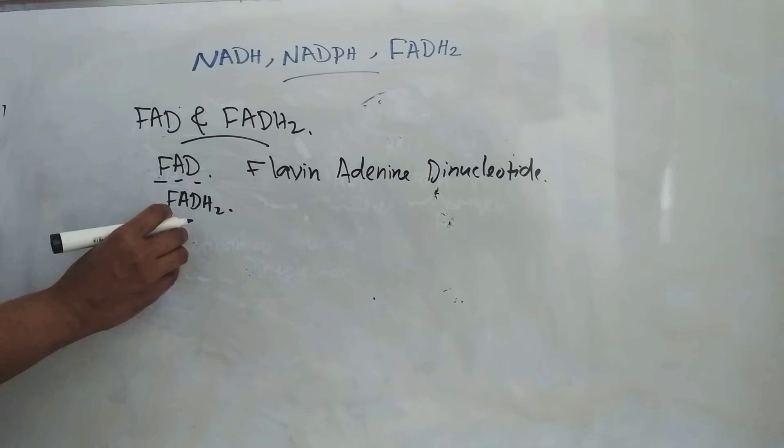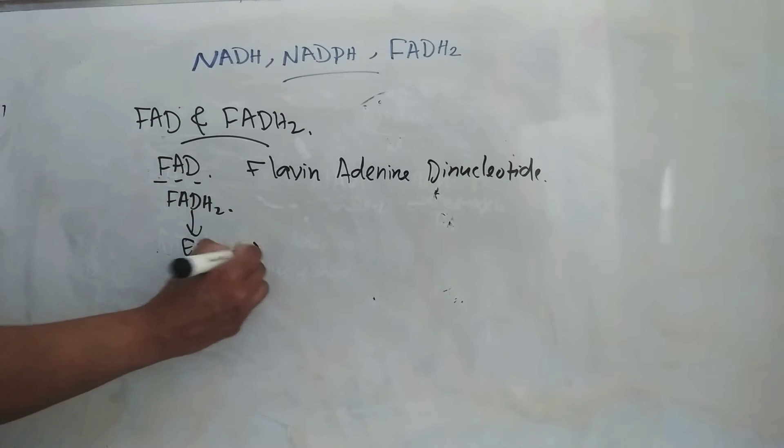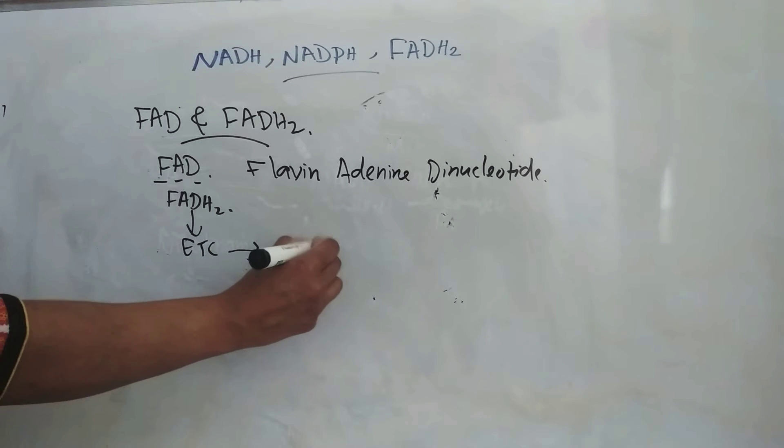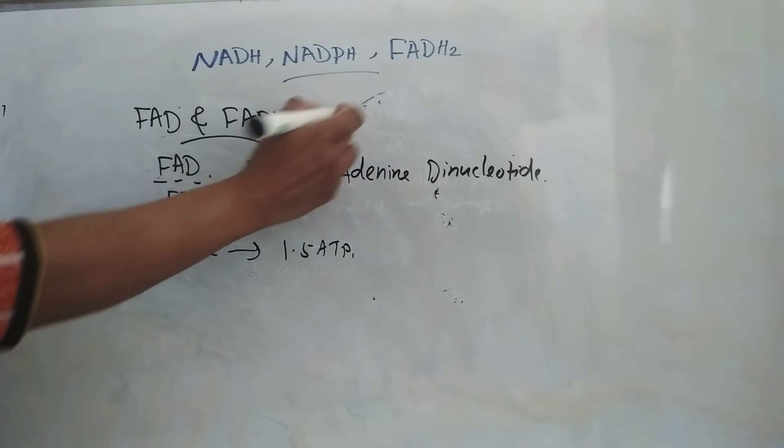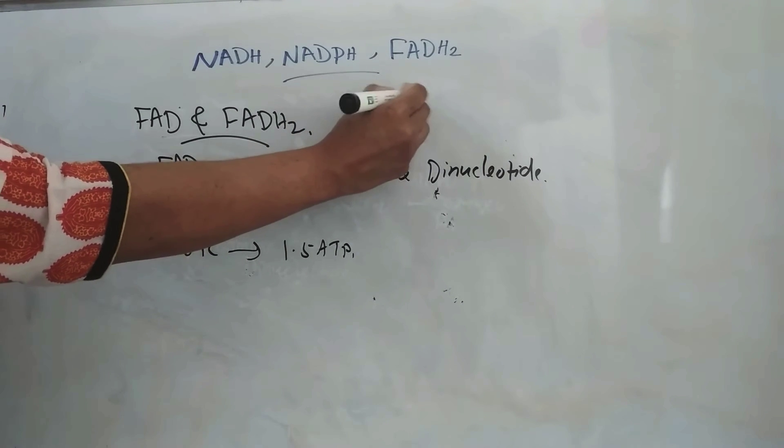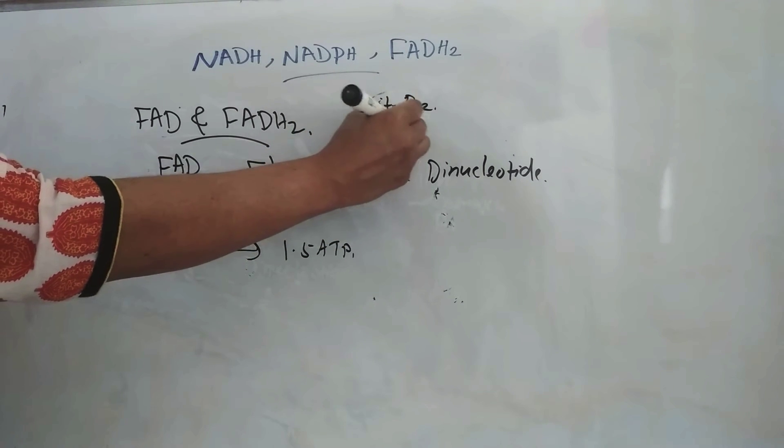FADH2, it is a major electron carrier in oxidation of fuel molecules. FAD will also go to electron transport chain and it will give 1.5 ATP. This FAD is a derivative of vitamin B2, that is riboflavin.